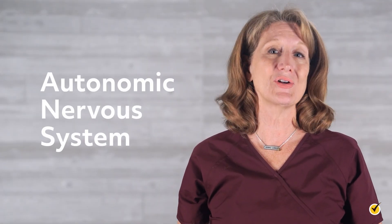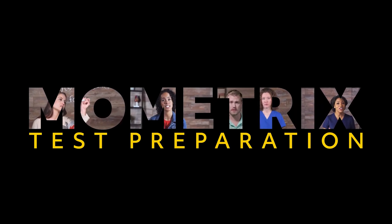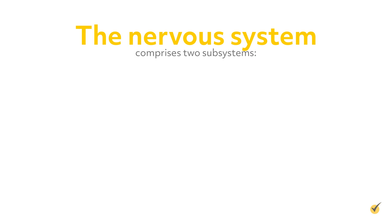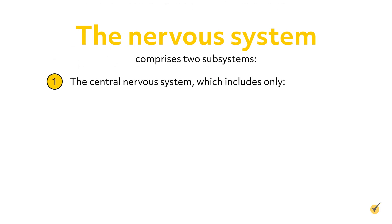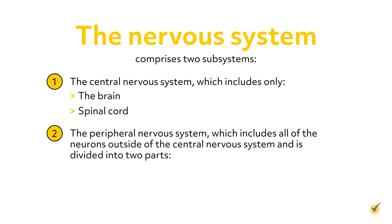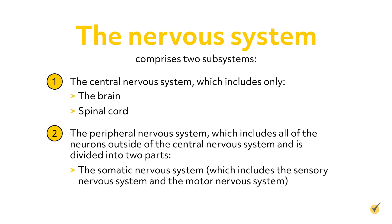Welcome to this video about the autonomic nervous system. The nervous system comprises two subsystems. First, the central nervous system, which includes only the brain and spinal cord. Second, the peripheral nervous system, which includes all of the neurons outside the central nervous system and is divided into two parts: the somatic nervous system, which includes the sensory nervous system and the motor nervous system, and the autonomic nervous system.